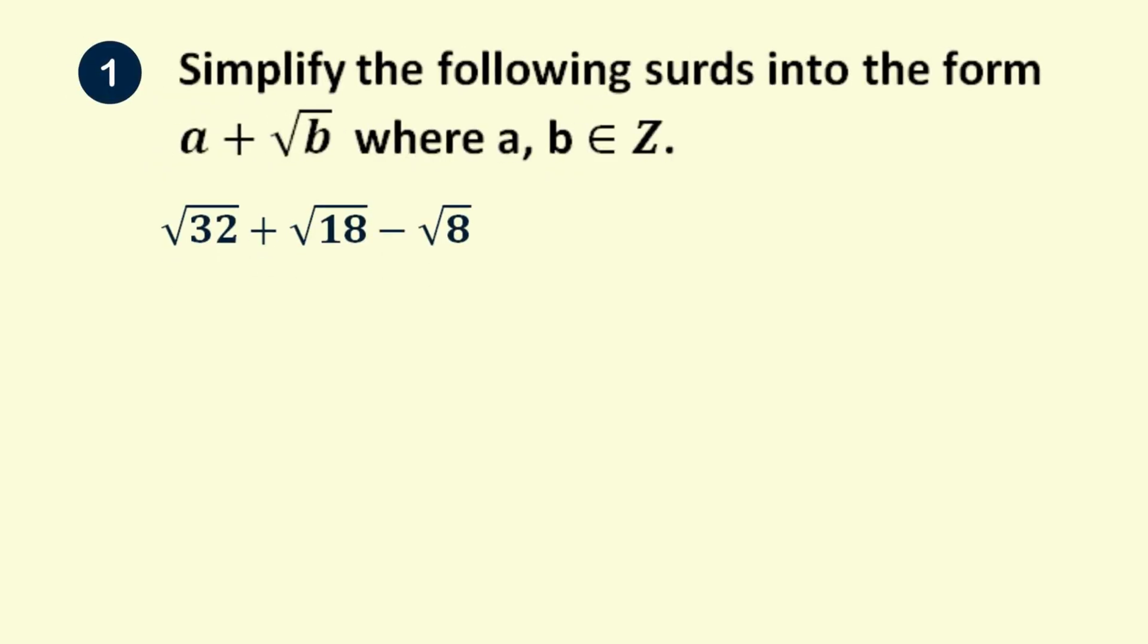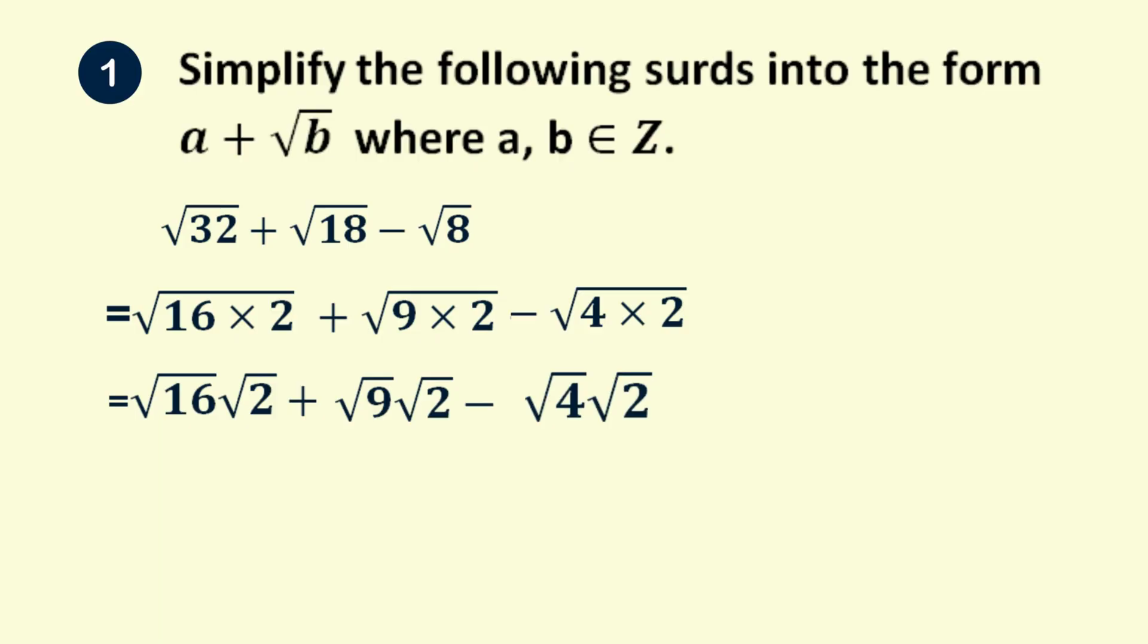The first problem is to simplify root 32 plus root 18 minus root 8. Now 32 can be rewritten as 16 times 2, 18 is 9 times 2, and 8 is 4 times 2. In applying the rule of surds, we get root 16 times root 2, root 9 times root 2, and root 4 times root 2.